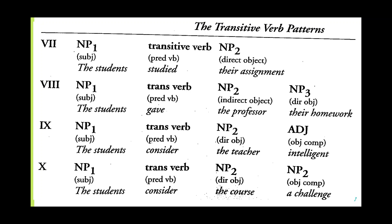In pattern nine, noun phrase one functions as subject, a transitive verb as predicating verb; however, we have noun phrase two functioning as indirect object, and noun phrase three as direct object. Example: 'The students gave the professor their homework.' In pattern ten, we have noun phrase one as subject, a transitive verb as predicating verb, noun phrase two as direct object, and an adjective functioning as object complement. Example: 'The students consider the teacher intelligent.'